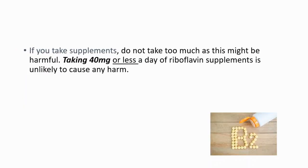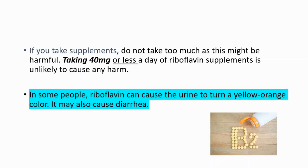If you take supplements, do not take too much as this might be harmful. Taking 40 mg or less a day of riboflavin supplements is unlikely to cause any harm. But in some people, riboflavin can cause the urine to turn a yellow-orange color, and it may also cause diarrhea.